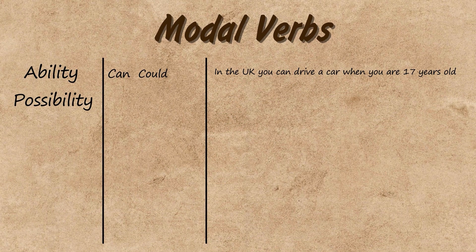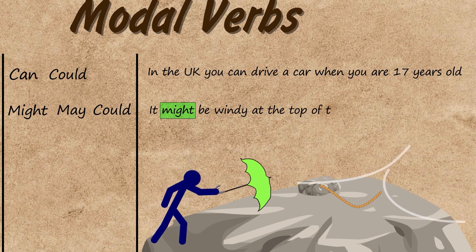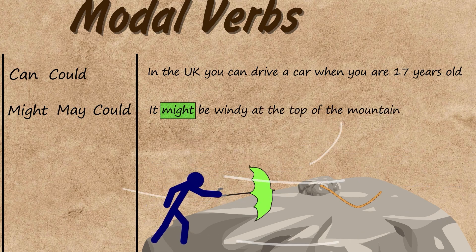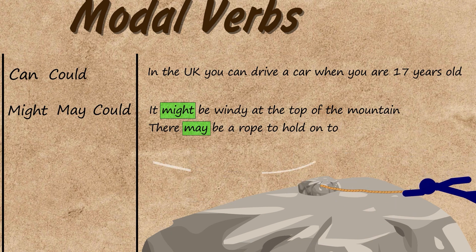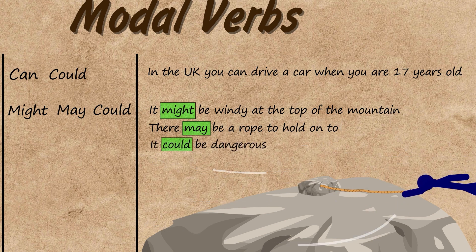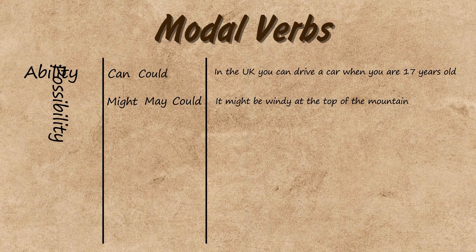To express possibility we can use the modal verbs might, may, or could. For example, it might be windy at the top of the mountain. There may be a rope to hold onto. It could be dangerous. All these sentences express situations that could be possible.